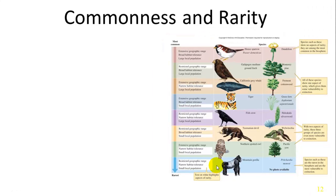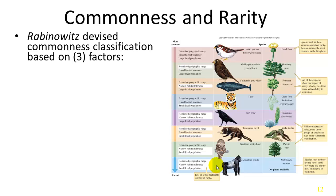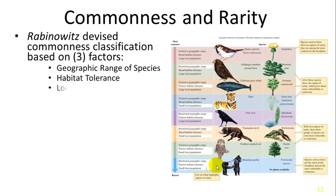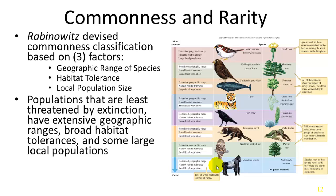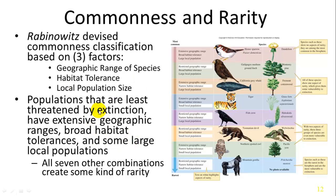An important consideration is how rare a species is. Rabinowitz identified three factors most significant to rarity: geographic range, habitat tolerance, and local population size. Populations least threatened by extinction have an extensive geographic range, broad habitat tolerance, and large local populations. Species at the opposite end of each factor are more likely to face extinction. Rabinowitz created seven combinations of these factors to categorize rarity.